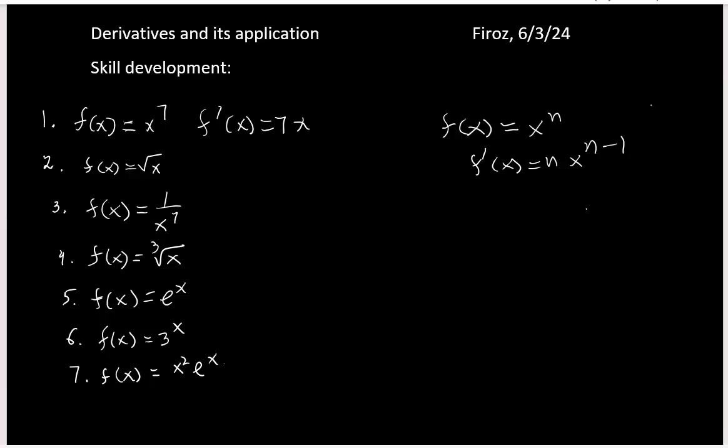The second one is very much known, that is square root of x. We know it's 1 over 2 square root of x. If you have any question why it is, you should check my first video from the same date, 6/3/24.